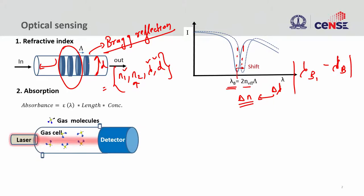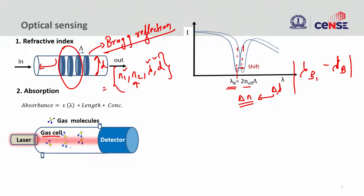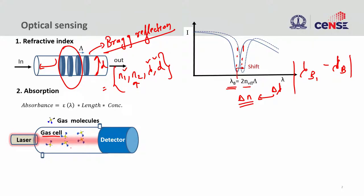We will see whether you need a resonant device like a Bragg — we can also have other devices like a ring resonator, which I will show in the next slides. The next way of doing sensing is using absorption. The gas molecules absorb at a certain frequency, coming from the vibrating molecules. The molecules vibrate at a certain frequency, and when you have a light wave of identical frequency, these molecules will absorb it.